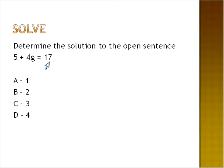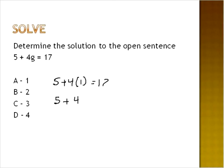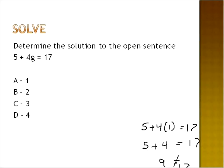Five plus four G equals seventeen. We're going to solve for the variable G. We'll plug in each value to see what happens. Five plus four times one — G being one — five plus four is nine. Nine is definitely not equal to seventeen, so we move on. All we did was plug the value of one into the equation wherever we saw the letter G.